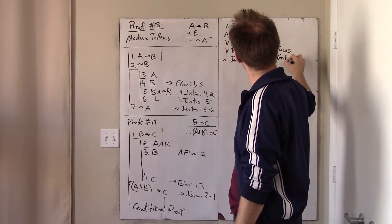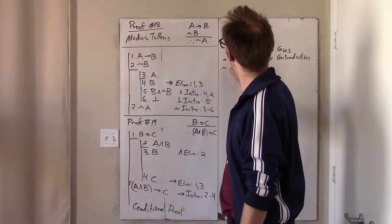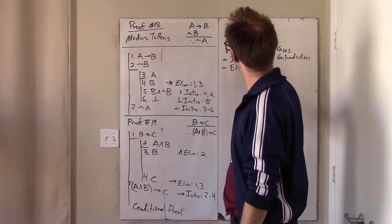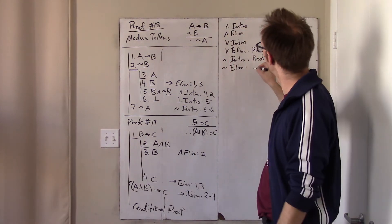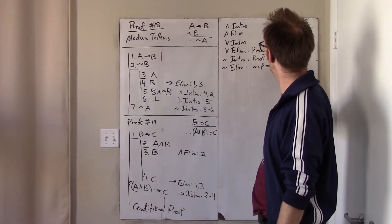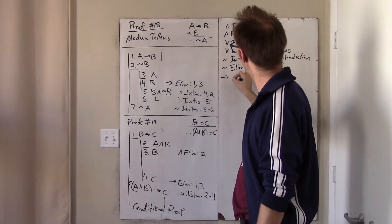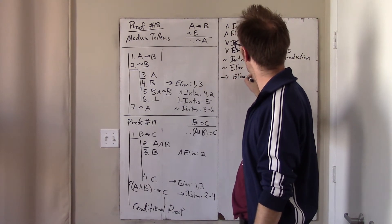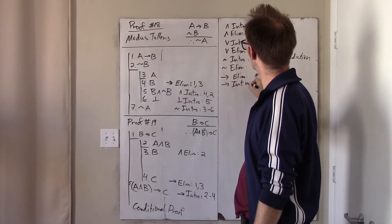Then you have or intro, this is the one where you weaken your argument by oring something on to something you already know. And you have or elimination, which is proof by cases. Then you have negation intro. This is proof by contradiction. And then you have negation elim, or what you might call double negation elim. This just says that from not not p, you can get p. And now we've seen arrow elim, which is just modus ponens, and arrow intro, which is conditional proof.